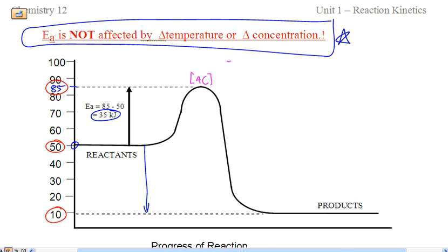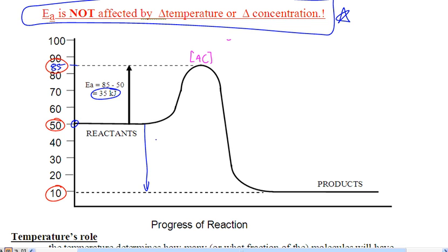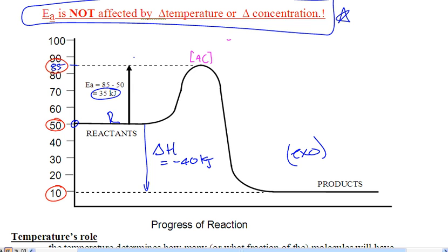Let's put some numbers on this. Here's an exothermic graph: Delta H goes from 50 down to 10, which equals negative 40 kilojoules. The EA starts at the reactants and goes to the top of the hill — from 50 to 85 — so the EA is 35 kilojoules. It takes 35 kilojoules of energy to break those bonds; molecules have to collide with EA equal to 35 or greater for a successful collision. That is determined by the nature of the reactants, not by temperature or concentration.